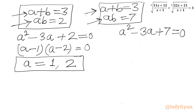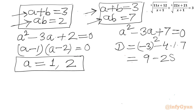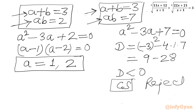For the second quadratic with ab equals 7: a² minus 3a plus 7 equals 0. I will check the discriminant only. It will be b² minus 4ac, so (-3)² minus 4 times 1 times 7, giving 9 minus 28, which is negative. Since the discriminant is negative, we get complex solutions, so we can easily reject this system. The only accepted values are a equals 1 and a equals 2.